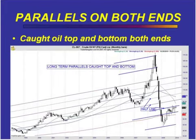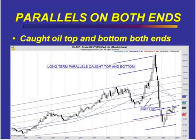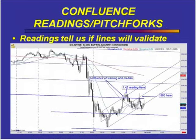What you should take from this section is that parallel warning lines are excellent tools for catching tops and bottoms of long-term trends. You'll see that this is the commodity crash in the oil market. The parallel warning lines almost perfectly caught the top and the bottom. Basically, what we're doing on this chart is taking a confluence of pitchfork lines and putting the readings on it so we can get a good idea if the particular magnet line of the pitchfork is going to confirm.